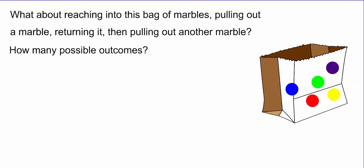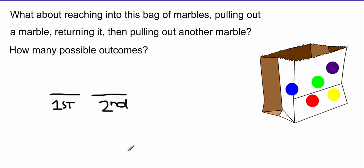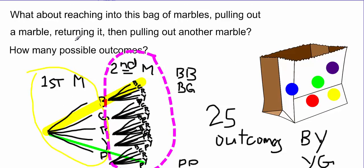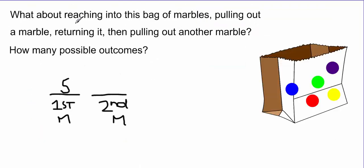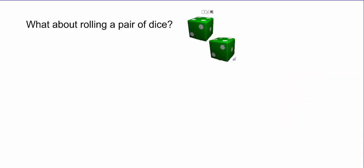Let's go back to the marble example. We reach in and pull out a marble, put it back, then pull out another — two simple events. That's why there are two slots. Pulling the first marble has five possibilities, and since we returned the marble, pulling the second marble also has five possibilities. Just as our tree had five branches off each of the original five branches, multiplying 5 × 5 gives us 25 total outcomes.